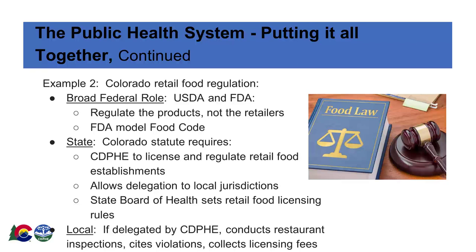A second example of overlapping authorities is the regulation of restaurants in Colorado. At the federal level, several federal agencies — including the United States Department of Agriculture (USDA) and the Food and Drug Administration (FDA) — have responsibilities associated with the regulation and setting of standards for the production of food. Additionally, the FDA has produced a model law known as the food code that states may choose to enact or adopt, setting the regulatory framework for food. At the state level, Colorado law requires CDPHE to license and regulate retail food establishments, which include restaurants, and set the rules for the licensing program. The State Board of Health has adopted the 2013 version of FDA's food code in its rules to set this standard.